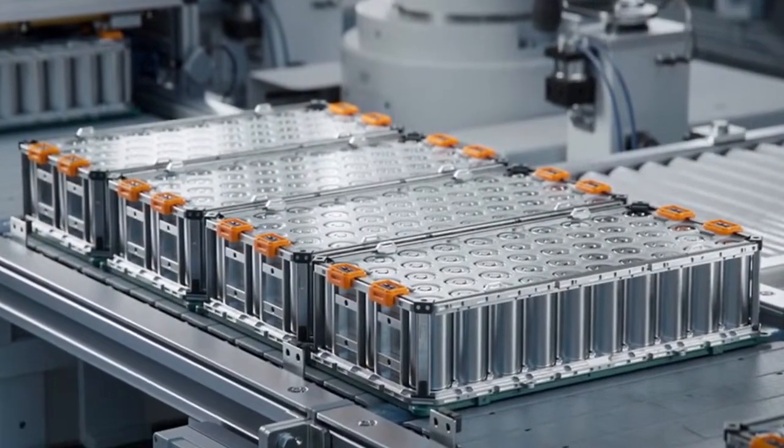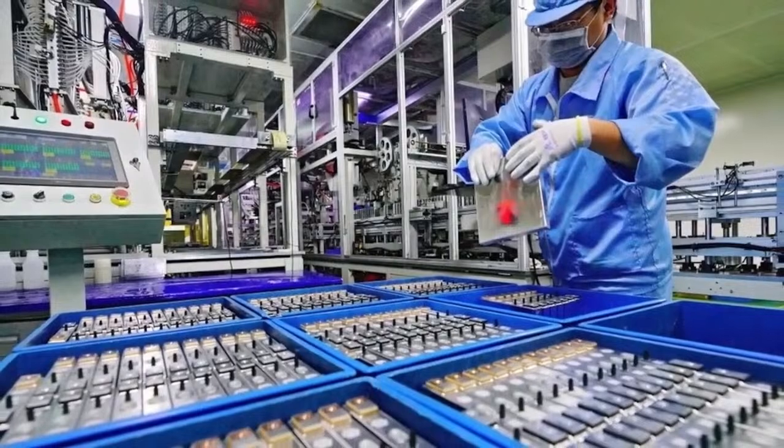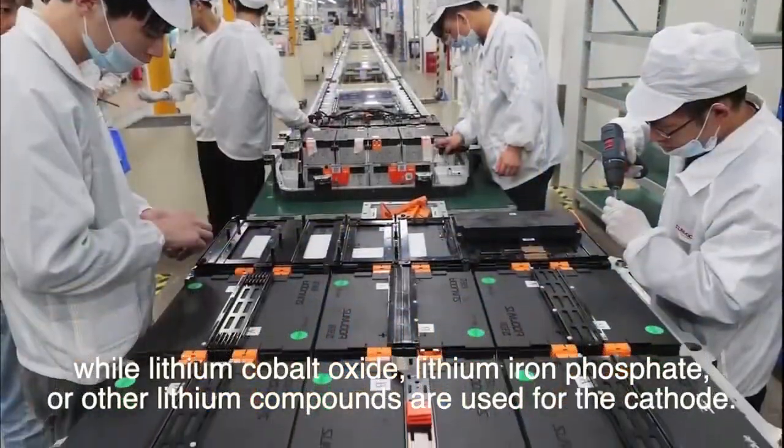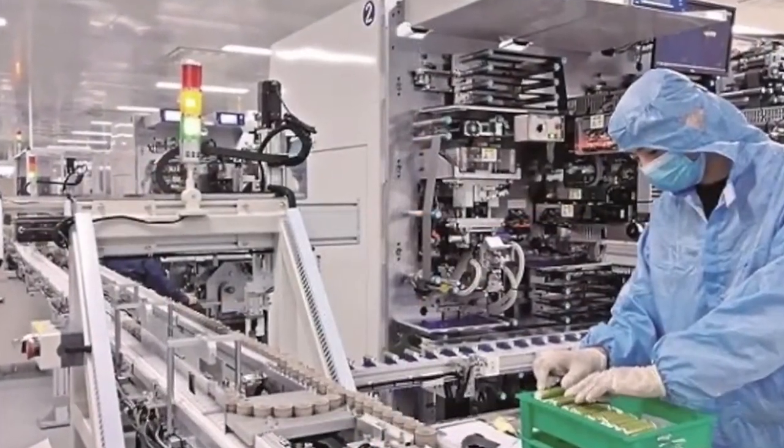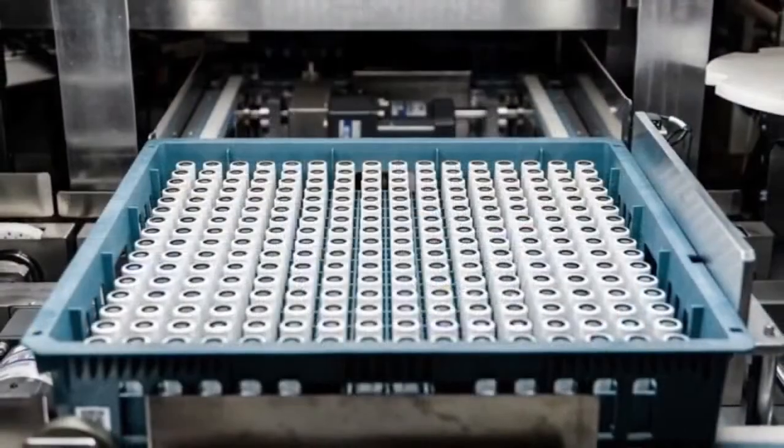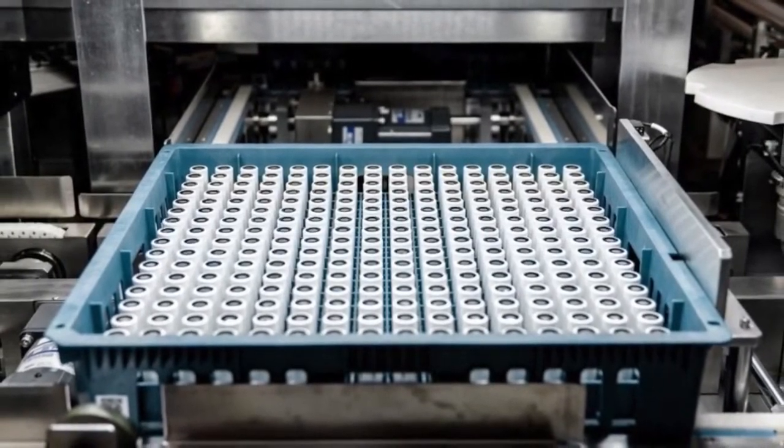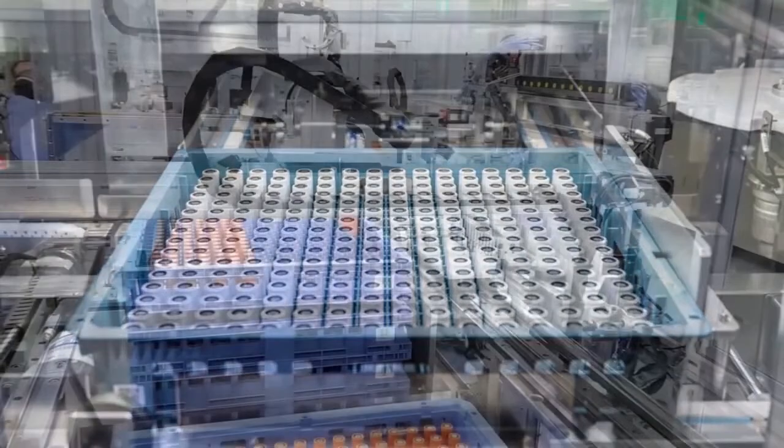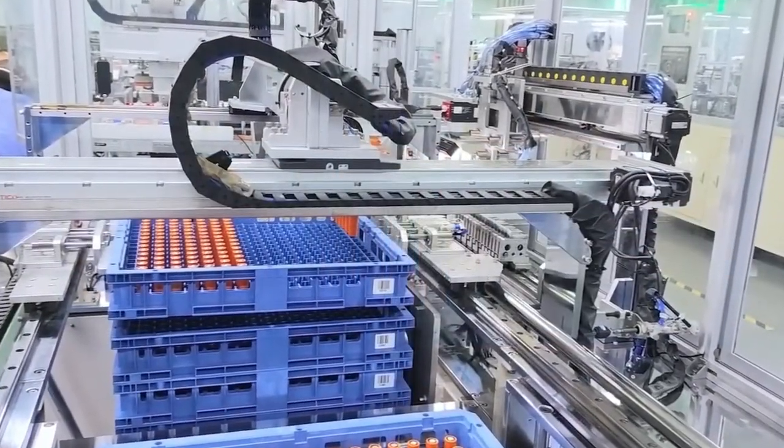The process begins with the production of electrode materials. Graphite is used for the anode, while lithium cobalt oxide, lithium iron phosphate, or other lithium compounds are used for the cathode. These materials are mixed with binders and solvents to create a slurry, which is then coated onto metal foils. Precision coating machines ensure uniform thickness and distribution of the electrode materials.